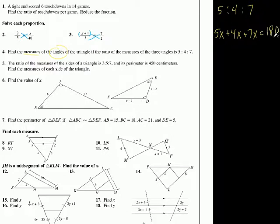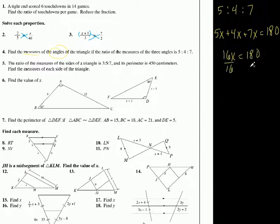When it says angles of a triangle, you put 180. Let's go through this: 5 and 4 is 9, and 7 is 16. So 16x equals 180. Divide by 16 and let's see what x is equal to.